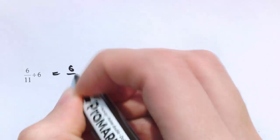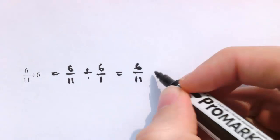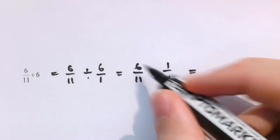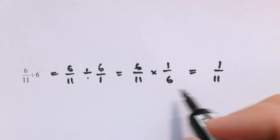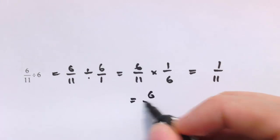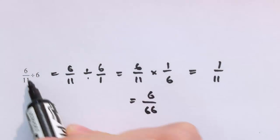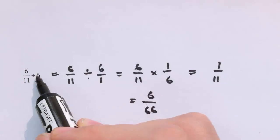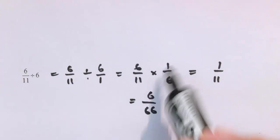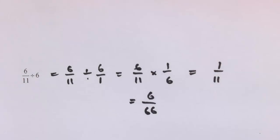For 6/11 divided by 6, again thinking of that 6 as 6/1, we turn it upside down and multiply. The 6s cancel, leaving 1/11 — the same as 6/66 if you wanted to put that intermediary step in. So dividing a fraction by a whole number is the same as multiplying the denominator by that number, because 6 and 1/6 are reciprocals of each other.